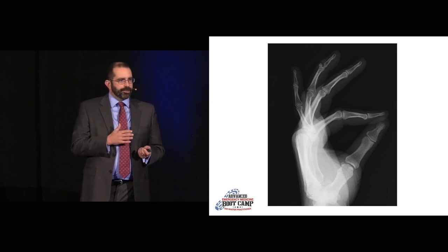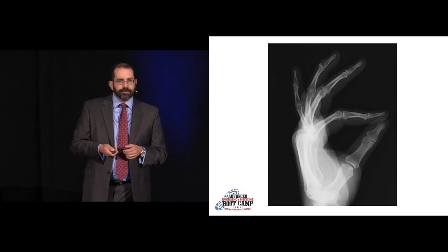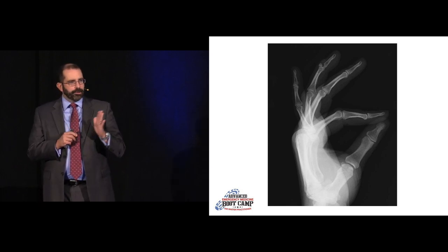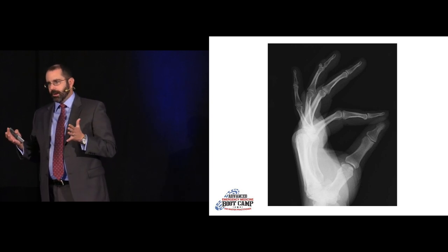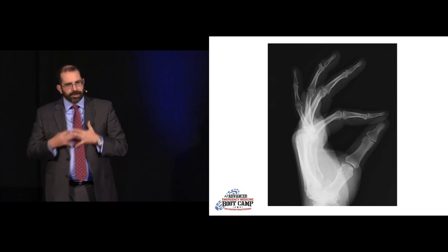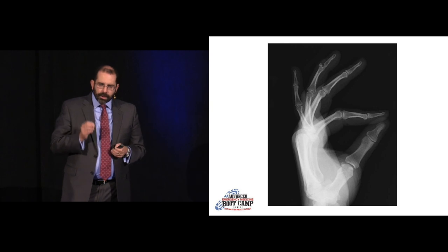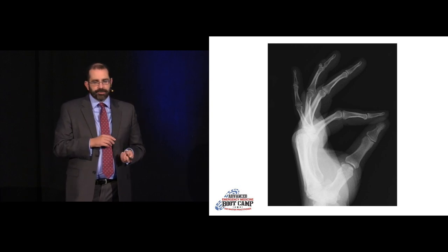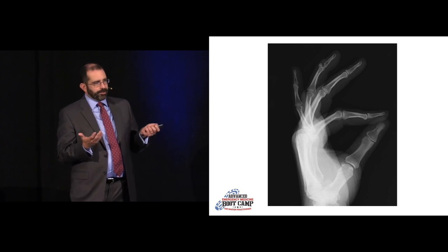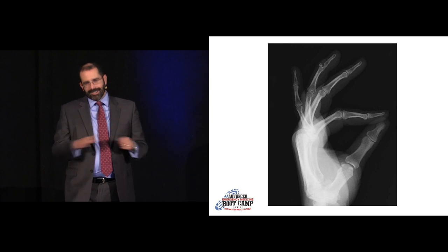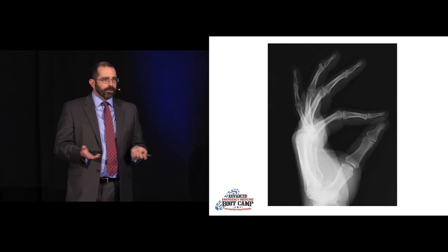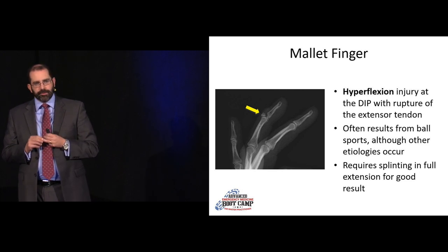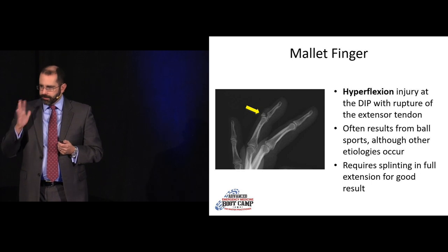This kid comes in with finger pain playing basketball. On the lateral, it's almost the exact opposite of jersey finger — there's a little avulsion on the extensor side of the DIP. This is a mallet finger, occurring with forced flexion of a finger held in extension — common in ball sports when you take a bad snap. These are extensor tendon injuries often managed non-operatively with splinting for eight to twelve weeks. If you move it at any time during that period, it resets the clock and may require operative repair.